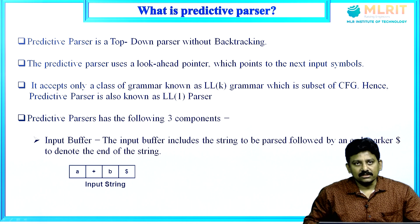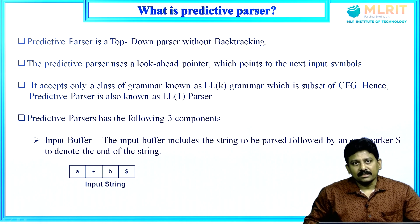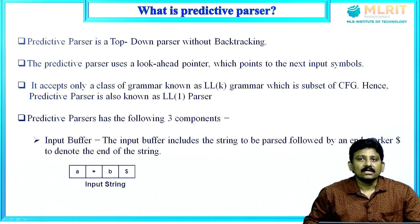The first L indicates left to right scanning of the input string — that is, parsing the string from left to right — and the second L indicates leftmost derivation.